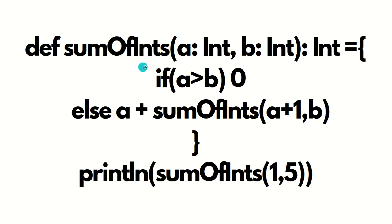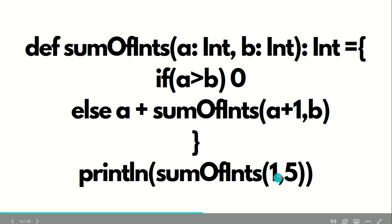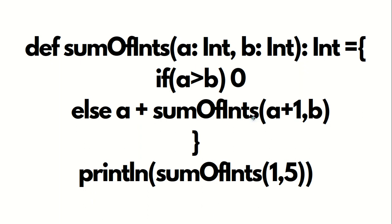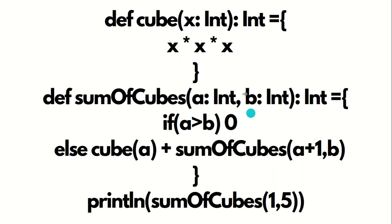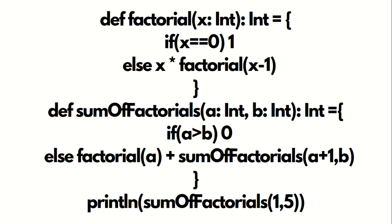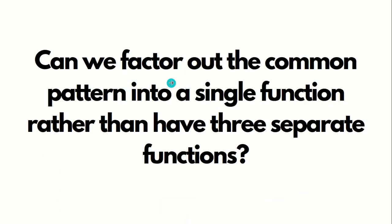Let's look at examples without higher order functions. The first calculates the sum of integers between two integers a (lower bound) and b (upper bound) — so 1 + 2 + 3 + 4 + 5 = 15. Similarly, another function finds the sum of cubes between two integers, and a third finds the sum of factorials between a and b — all without using higher order functions.